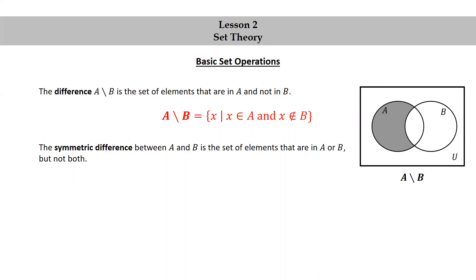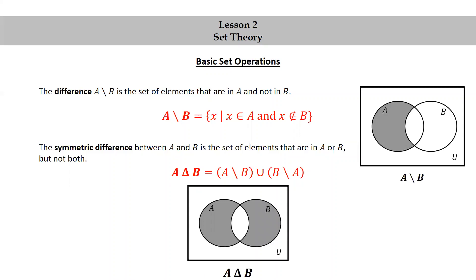The symmetric difference between A and B is the set of elements that are in A or B, but not both. We use this triangle or Greek letter delta for the symmetric difference, and we have the symmetric difference between A and B is A minus B union B minus A. Here's a Venn diagram that allows us to visualize the symmetric difference between A and B. Notice how we shade all of A and B except for the part that's common to both A and B. So another way to think of it is the part of A that does not include B together with the part of B that does not include A.